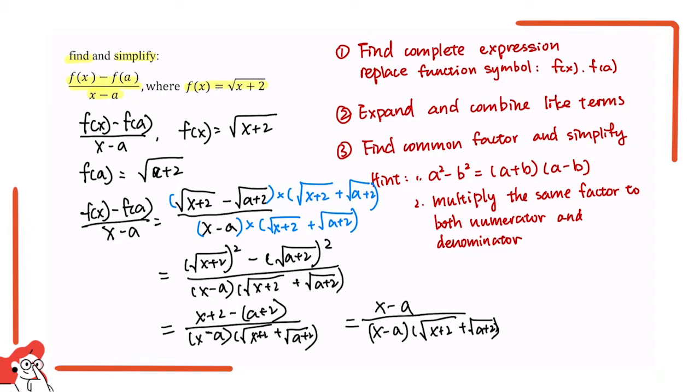And now we can see that both the top and bottom have the x minus a as a factor. So we can cancel those two out and live with 1 on the top and the sum of the square roots in the bottom.